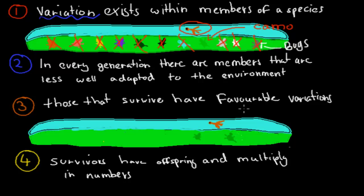Third: those that survive have favourable variations, and survivors have offspring and multiply in numbers. Imagining there are two light green bugs — so green you can barely see them — that is a favourable adaptation. Now they can make more babies, more offspring, because they're the only survivors. All the little baby bugs from their offspring are going to be green as well, with that same favourable trait.